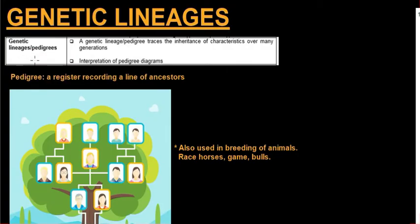In this video we'll be looking at genetic lineages, also known as pedigrees. You need to know what a genetic lineage or pedigree is, what it does, and how to interpret these diagrams. A genetic lineage or pedigree traces the inheritance of characteristics over many generations, or alternatively, it is a register recording a line of ancestors.